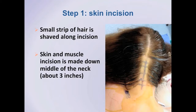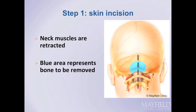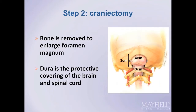A small strip of hair is shaved along the incision. A skin and muscle incision is made and dissection is carried out down to the base of the brain. Neck muscles are retracted just enough to expose the suboccipital bone and the C1 ring. Bone is removed to enlarge the foramen magnum, typically about three centimeters in overall dimension from side to side and up to down, customized to the shape of each patient's skull to optimize restoration of normal flow.